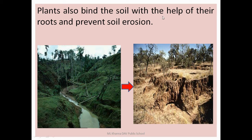Plants also bind the soil with the help of their roots and prevent soil erosion. Look at this picture — it is full of plants. In this other picture, only a few plants are there and soil erosion is also present. So through plants, we can help to prevent soil erosion and bind the soil.